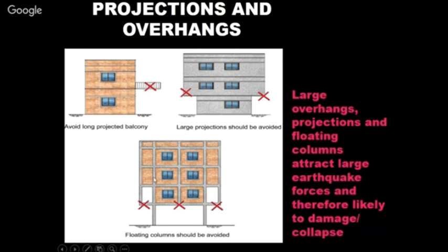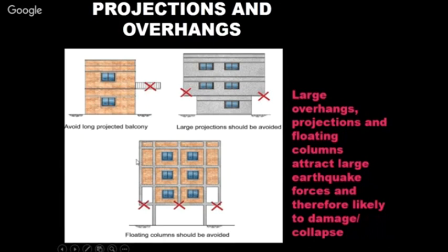Separation joint requirements per Indian code: 15 mm for load-bearing structures, 20 mm for RCC frame structures, and 30 mm for steel frame structures. Practically, 50 mm gaps are common. The required gap also depends on the number of stories in the building.